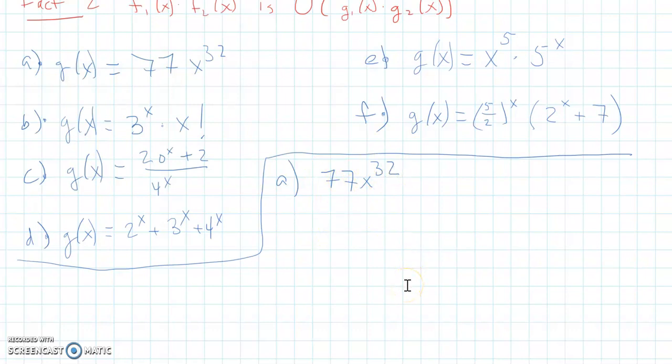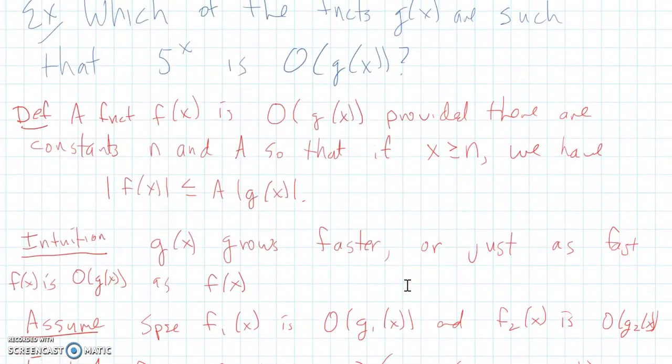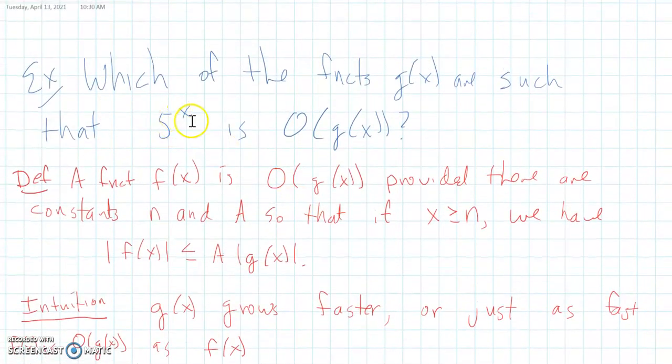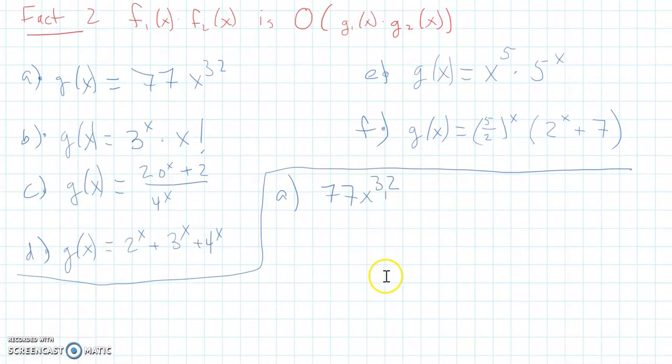And we're trying to find functions so that 5 to the x is big O of g to the x. Well, this one doesn't work because 5 to the x is not big O of any polynomial function because exponentials always grow faster than polynomials do. So that one's out.